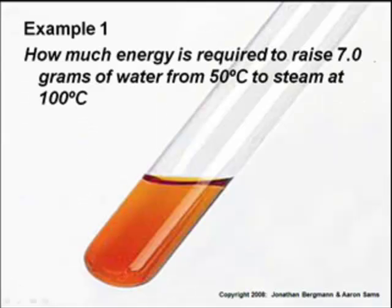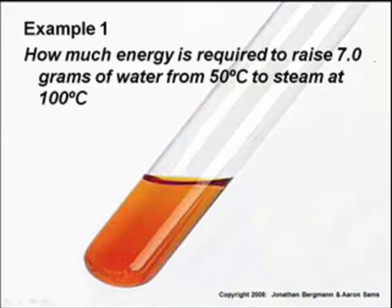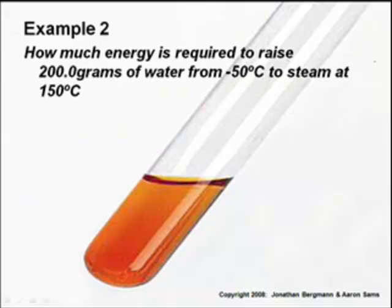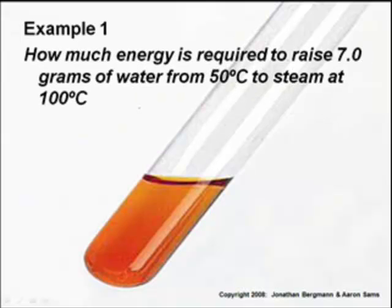You've done these problems before. One other thing, the flat parts of the graph are always given in kilojoules, the delta h's are. And when you do q equals mc delta t, your answer shows up in joules. And when you add them all together, if you're calculating the total amount of energy, be careful to make sure your units are consistent.